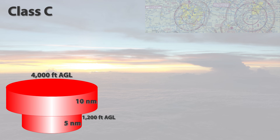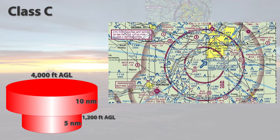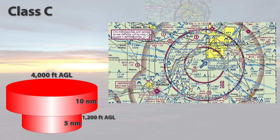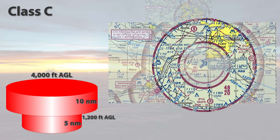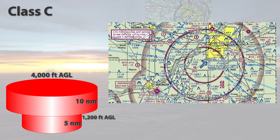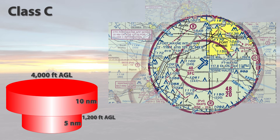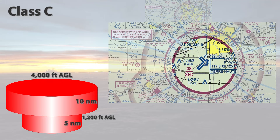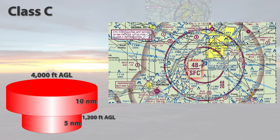Now let's take a look at a couple of examples. The first is a typical Class Charlie airspace surrounding Fort Wayne, Indiana. Remember that when we look at sectional charts, all altitudes are in MSL or above sea level unless otherwise noted. Class C is defined on a sectional chart with magenta lines surrounding Fort Wayne International Airport, depicting an inner and outer ring surrounding the airport. The size and shape of Fort Wayne is that of a typical Class C airspace, with two rings or shelves surrounding the primary airport. The inner ring has a radius of five nautical miles and begins at the surface with a ceiling of 4,800 feet MSL.